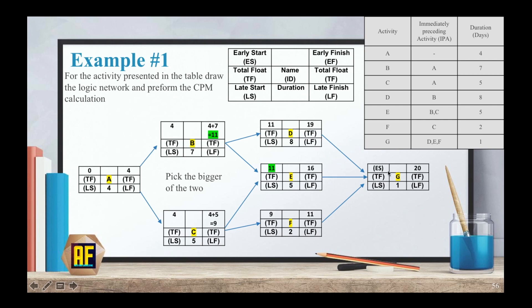My next activity, activity G, activity G comes from D, E, F and has a duration of one day. What is my ES? Again, pick the bigger of the three activities this time. And we have 19, 16 and 11. So my ES for G will be 19, 19 plus one equals 20. So now that we finished going forward, we need to start going backwards. How do we go backwards? If activity G earliest finish is after 20 days and I have no more activities, then my late finish should also be after 20 days. So EF equals LF.